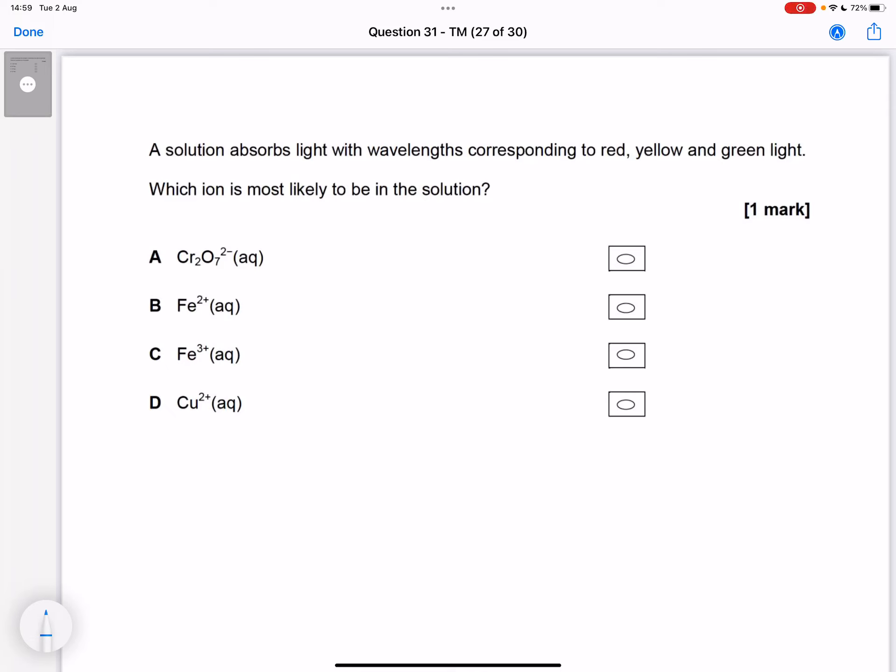A solution absorbs light with wavelengths of red, yellow, and green. What is most likely to be the solution? When you absorb light, you would transmit the complementary colors, so the remaining colors from the rainbow, and you would appear the other colors.